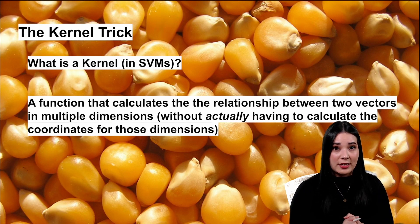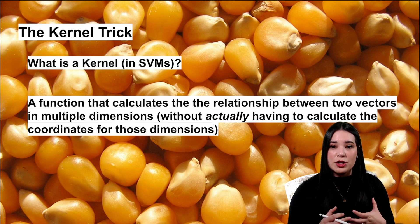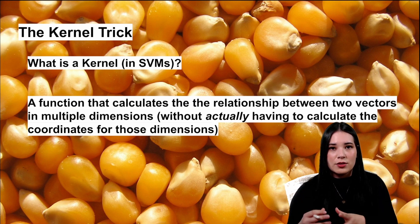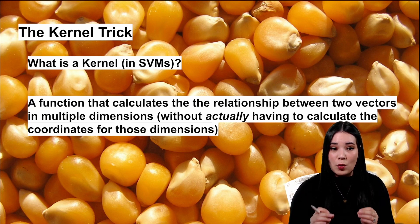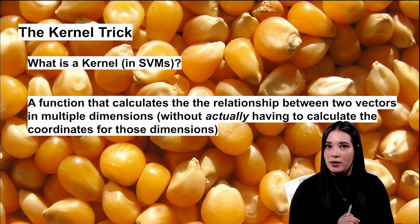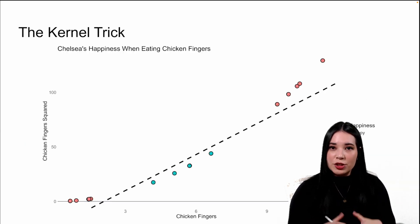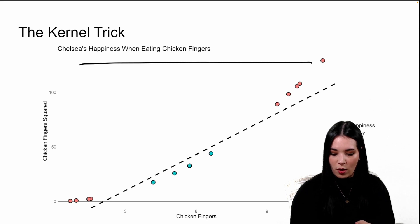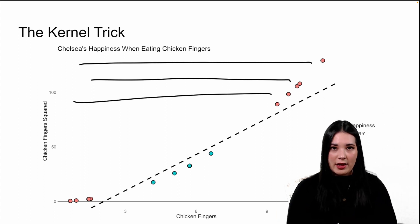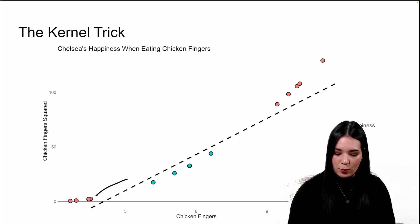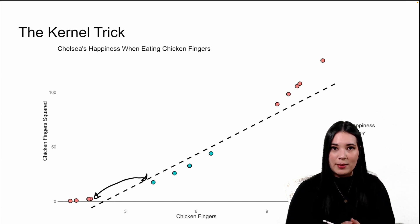This projection into multiple dimensions is the basis of the kernel trick. A kernel in the case of SVMs is a function that calculates the relationship between two vectors or data points in multiple dimensions without actually making us calculate what the coordinates of those dimensions are. In our chicken example, we actually created the coordinates for our multiple dimensions — we actually had to calculate what all the chicken fingers squared values were and use those coordinates as if they were another predictor in our model.